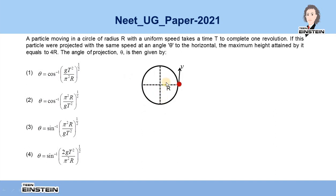According to the problem, the particle is moving in a circular path of radius R. Let us say the particle has speed v, and it takes time T to complete one full revolution.